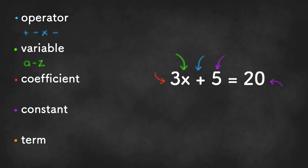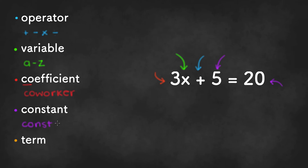Coefficients and constants can get confusing, so here's a quick tip. Coefficients work together with a variable, so you could call it a co-worker. And constants are always alone, so you could say that they are constantly alone.